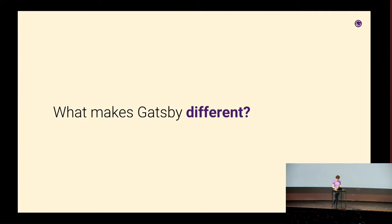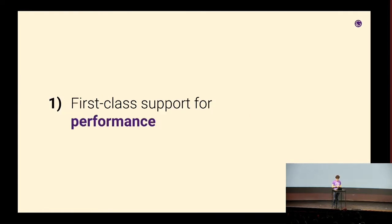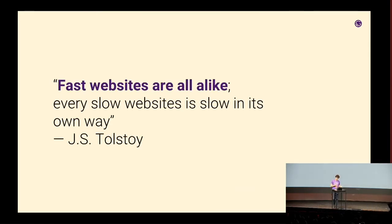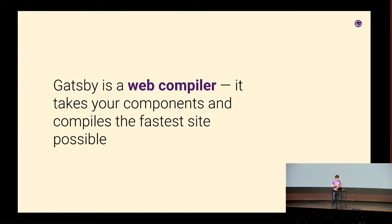So what makes Gatsby different? First, we have first-class support for performance. I like to say fast websites are alike, but every slow website is slow in its own way. If you look at any fast website, it's doing a lot of the same stuff as every other fast website. So the idea we hit on is: why don't we just enforce those things within the framework? A lot of frameworks leave it up to you. Part of how Gatsby does that is we think of Gatsby as a compiler — you write React components, give them to us, and we turn that into the fastest site possible.